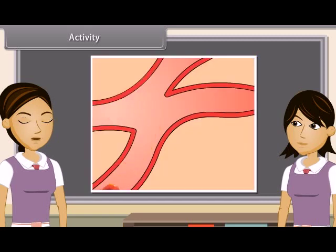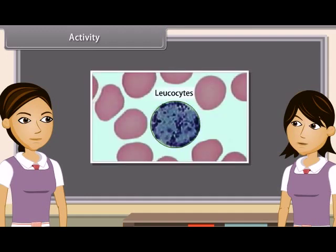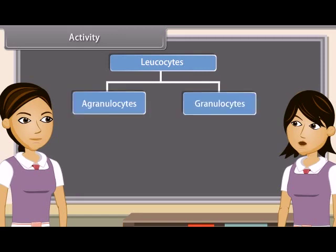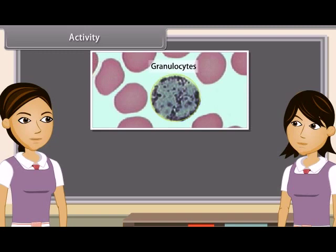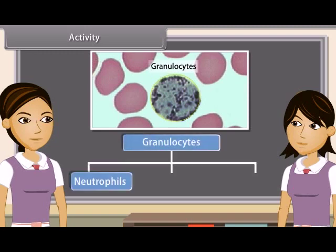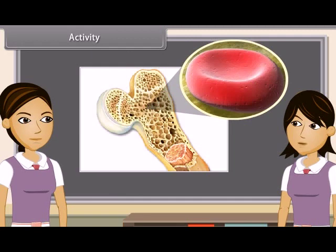Human red blood cells are circular, biconcave and denucleated and more in number. They contain an iron-bearing conjugated protein called hemoglobin, due to which they are red in color. Leukocytes are amoeboid, nucleated and whitish; they are larger in size but less in number. They are of two types: agranulocytes without granules and non-lobed nucleus — monocytes and lymphocytes; and granulocytes containing cytoplasmic granules and lobed nucleus — neutrophils, acidophils and basophils. Blood platelets are minute, enucleated, fragile fragments of giant bone marrow cells called megakaryocytes.